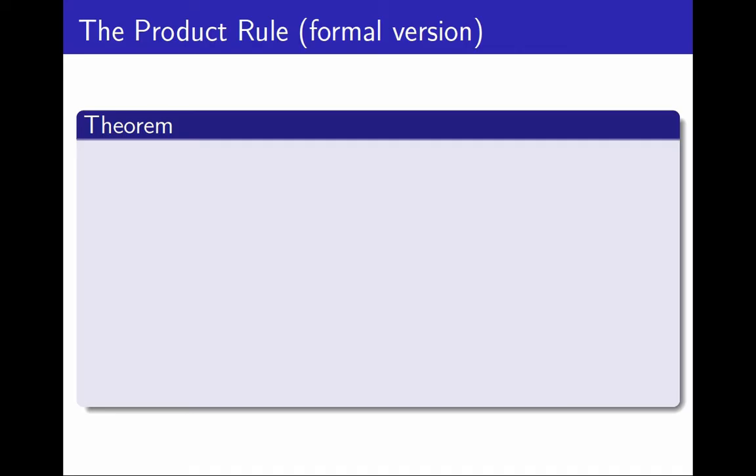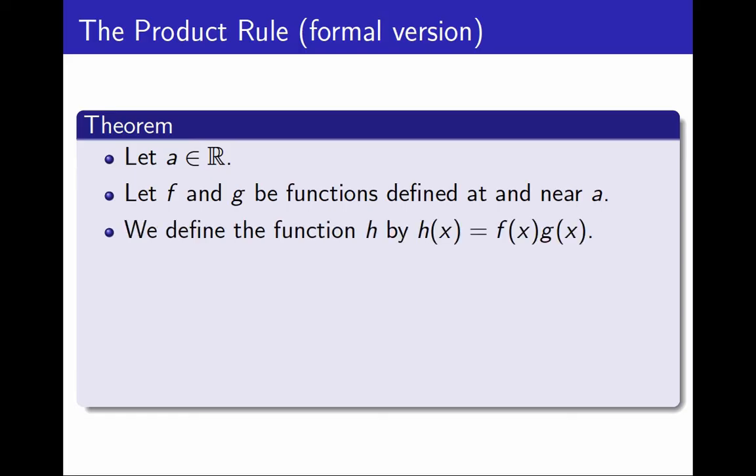As an example, here is the proper statement of the product rule. I begin with a real number a and two functions f and g defined at and near a. This is the same as asking them to be defined at least on an interval centered at a. For simplicity, I will refer to their product f times g as a function h.